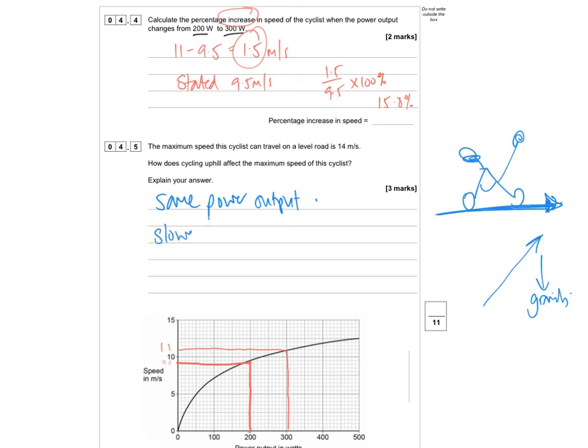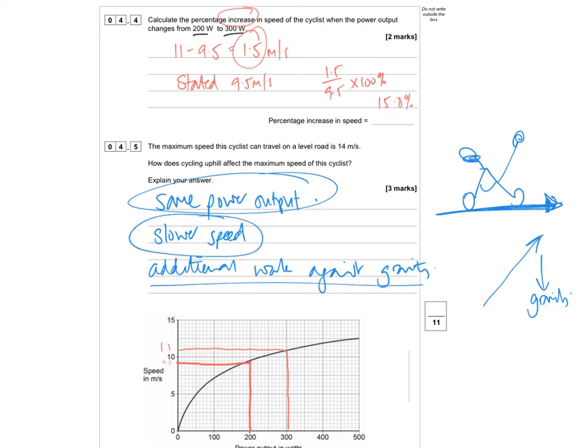So it's going to be a slower speed. And the reason for the slower speed is because some of the energy is going in to going against gravity. So additional work, you could say, additional work is used against gravity. The power of the cyclist stays the same. So by going uphill, you can imagine that it's going to be slower. And the reason to link it all together is you're doing work against gravity in addition.